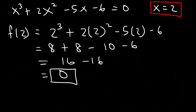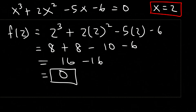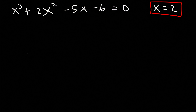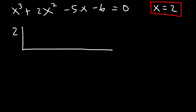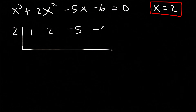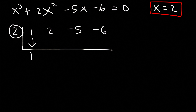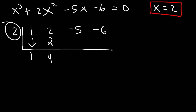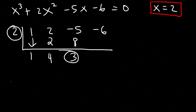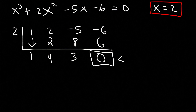Now let's use this zero to get the other zeros using synthetic division. The coefficients of the polynomial are 1, 2, -5, and -6. Bringing down 1: 2 × 1 = 2, and 2 + 2 = 4. Then 2 × 4 = 8, and -5 + 8 = 3. Then 2 × 3 = 6, and -6 + 6 = 0. Make sure this remainder is 0.